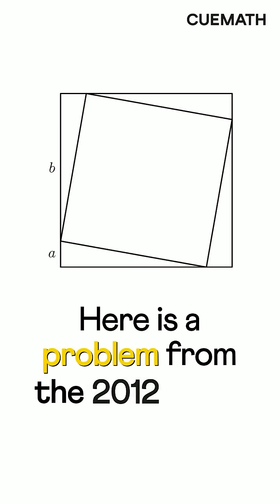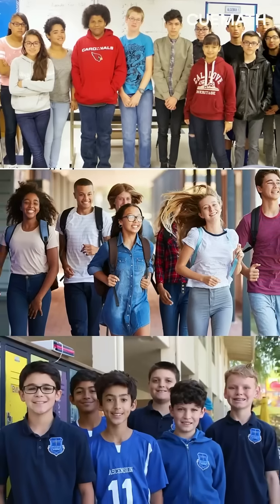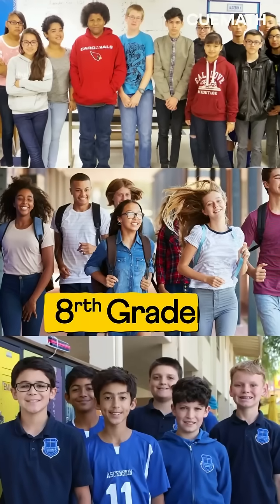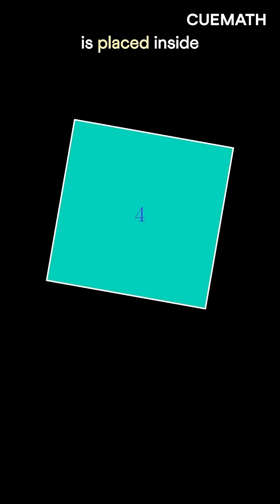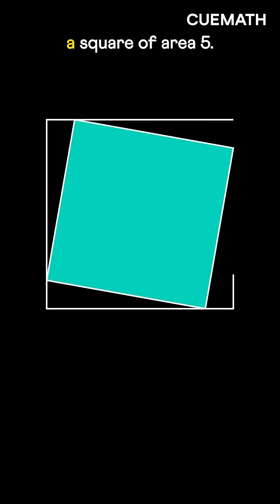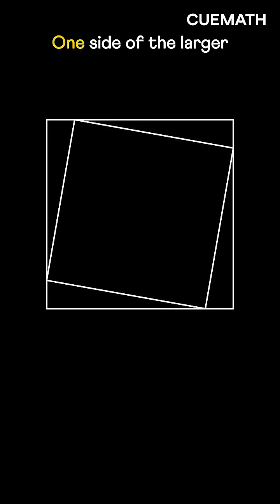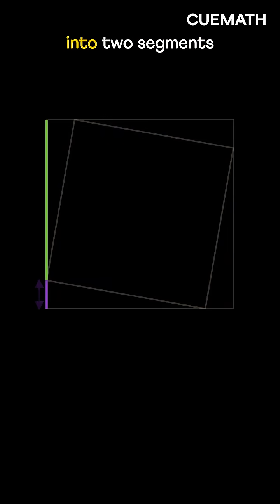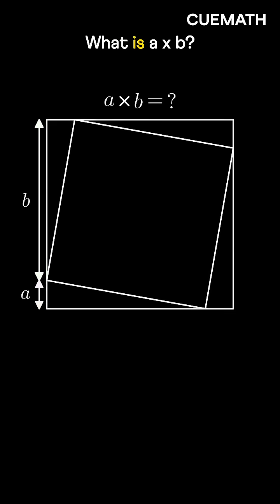Here's a problem from the 2012 AMC, a math contest for 8th graders. A square of area 4 is placed inside a square of area 5. One side of the larger square is divided into two segments of lengths A and B. What is A times B?